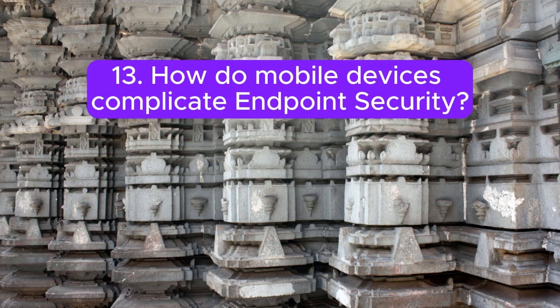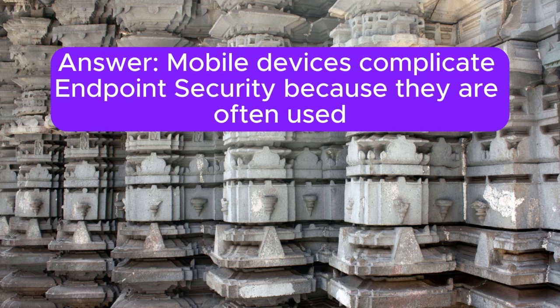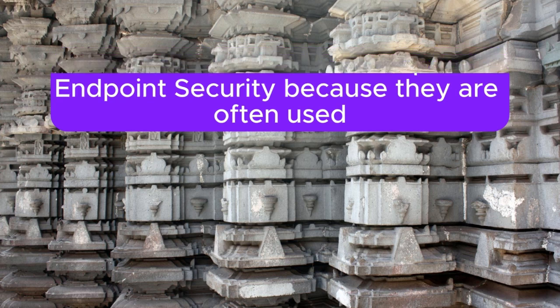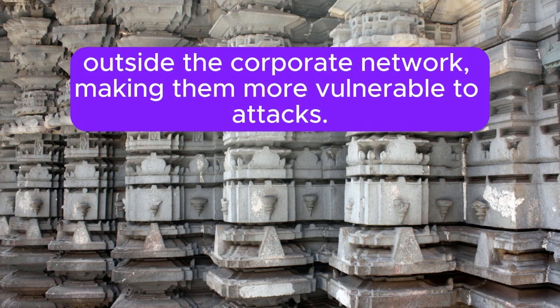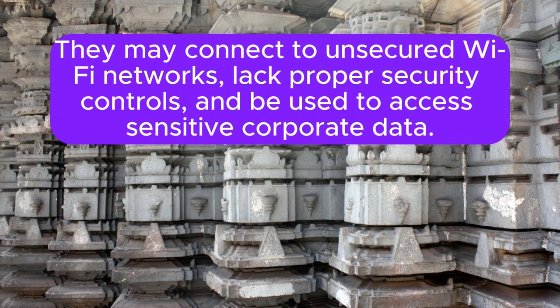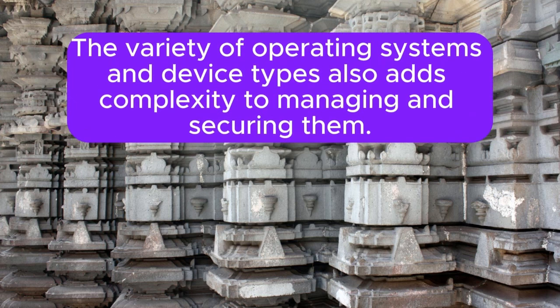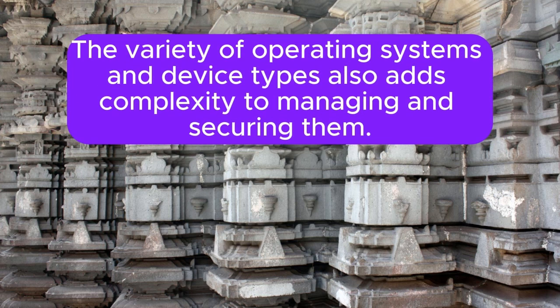Question 13: How do mobile devices complicate endpoint security? Mobile devices complicate endpoint security because they are often used outside the corporate network, making them more vulnerable to attacks. They may connect to unsecured Wi-Fi networks, lack proper security controls, and be used to access sensitive corporate data. The variety of operating systems and device types also adds complexity to managing and securing them.